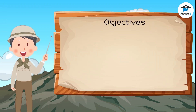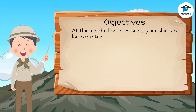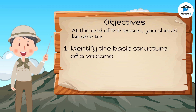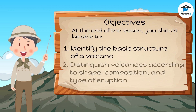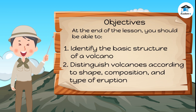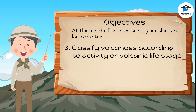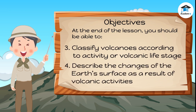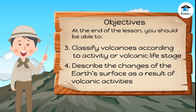Objectives. At the end of the lesson, you should be able to: identify the basic structure of a volcano; distinguish volcanoes according to shape, composition, and type of eruption; classify volcanoes according to activity or volcanic life stage; and describe the changes of the Earth's surface as a result of volcanic activities.